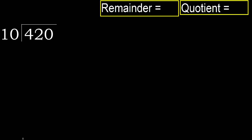420 divided by 10. 4 is less, therefore next. 42 is not less, therefore with 42.